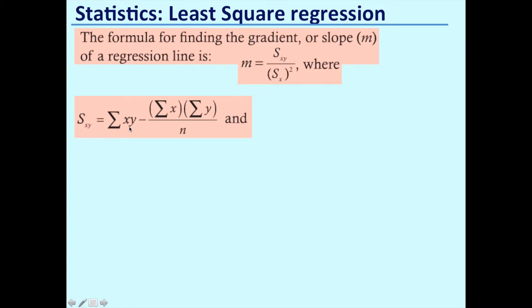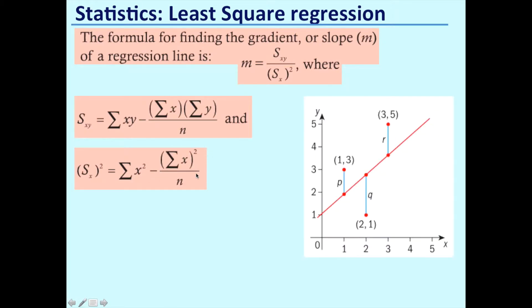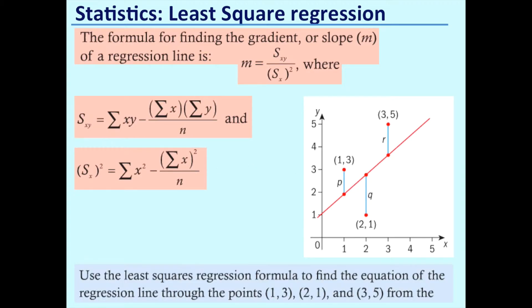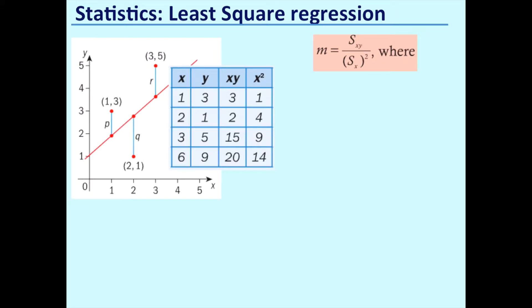So this is the formula we're going to look at. Now it looks intimidating, but all this is saying is the gradient M can be defined as Sxy over Sx squared. Sxy is just the sum of x multiplied by y minus the sum of x multiplied by the sum of y over n. And Sx squared is the sum of x squared minus the sum of x all squared divided by n. Let's put this in context.